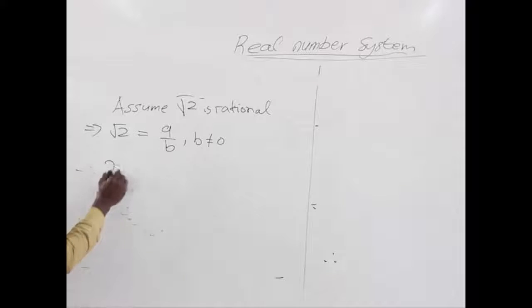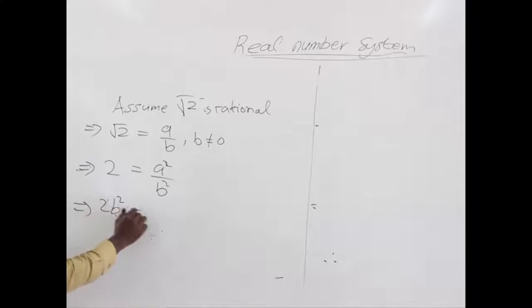So squaring both sides, we have 2 equals a squared over b squared, which gives us 2b squared equals a squared. Now we are going to the same procedure.